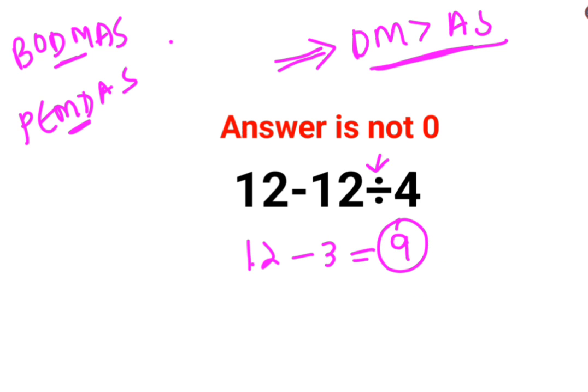Had this question had parenthesis or brackets, then in that case the answer would have been 0. But since the question didn't have parenthesis or brackets, you will always give division and multiplication higher precedence than addition and subtraction.